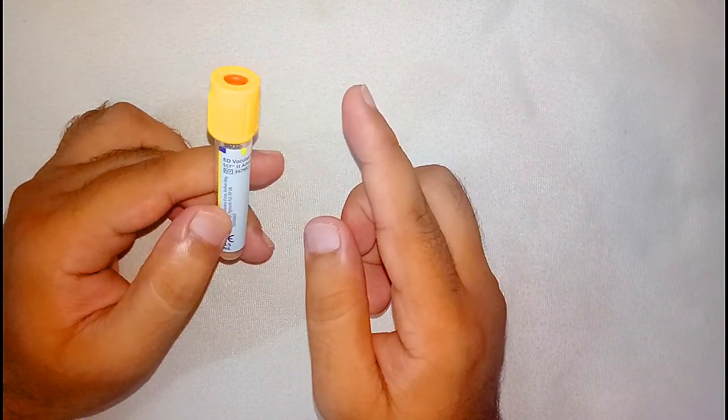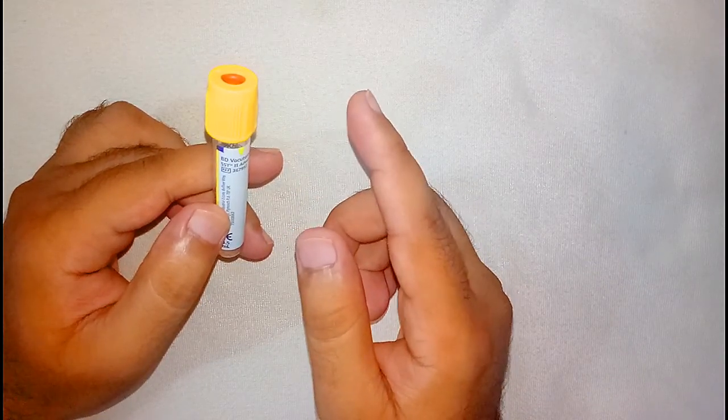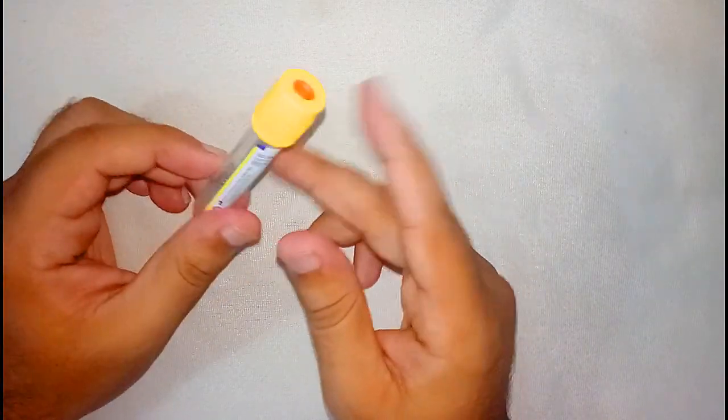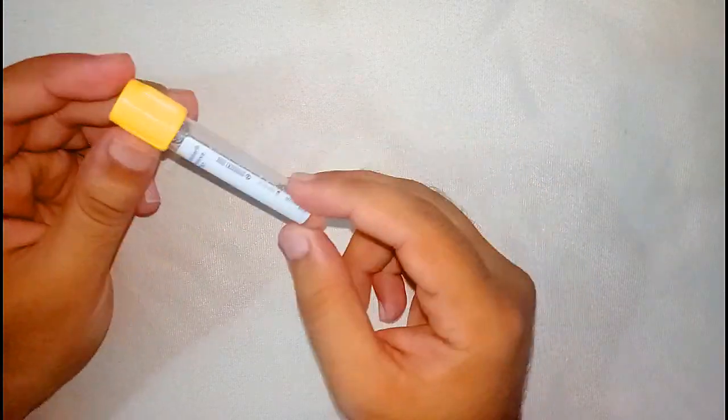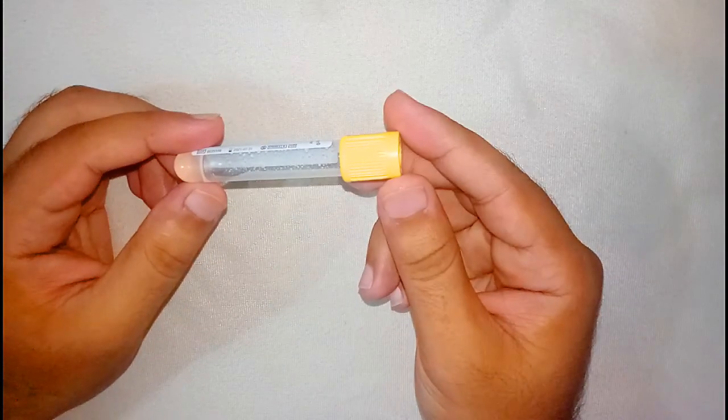is purple color, third is red color, and fourth is blue color. But here we will just focus on this yellow color vial. As you can see here, this is a blood collecting vial